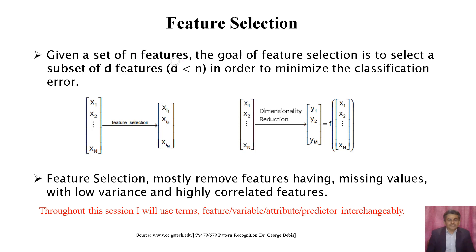Given a set of n features, the goal of feature selection is to select a subset of d features where d is less than n, in order to minimize the classification error. In the diagram you can see that the original data has n features, and after applying a feature selection technique we may get m features, where m is less than n.